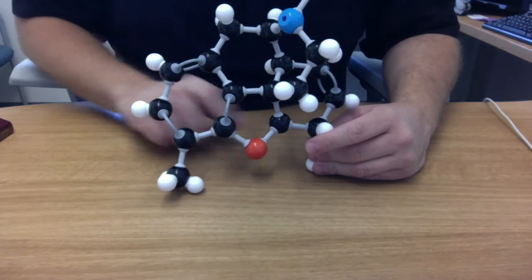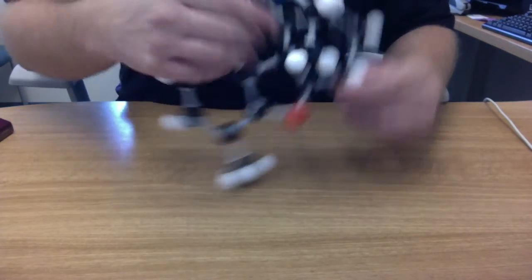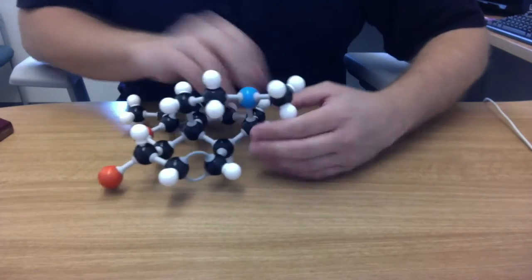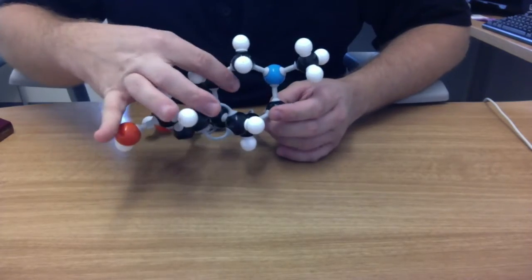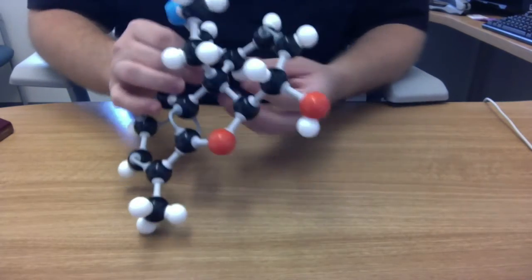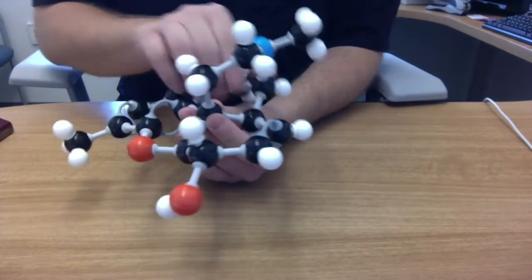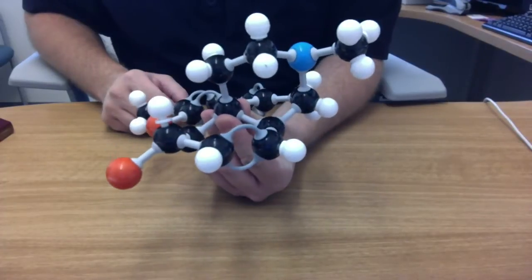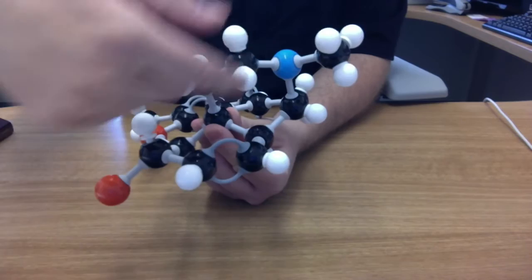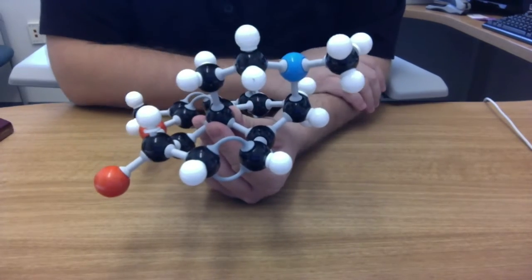So you got your one, two, three, four, and let's see if I can show that better on the camera for you guys. You have your quaternary carbon with sp3 hybridization, which is two carbons away from the nitrogen. You have your tertiary nitrogen.